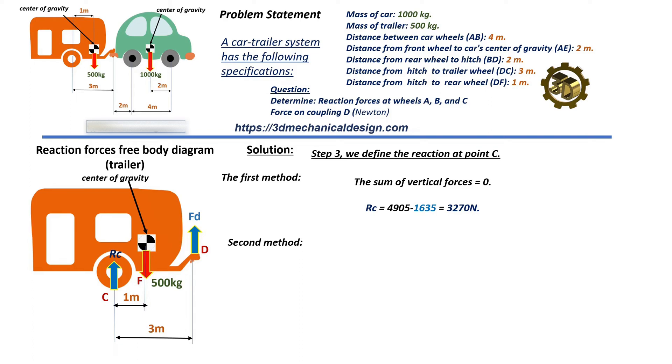Method 2: Sum of moments about point D. The sum of moments about point D equals zero. 4,905 times 2 minus RC times 3 equals zero. RC equals 9,810 divided by 3 equals 3,270 newtons. We got the same result.